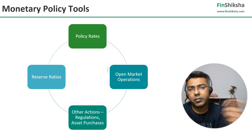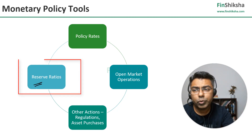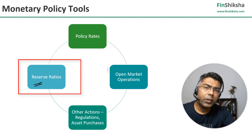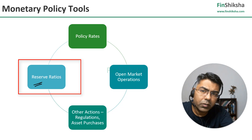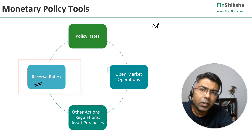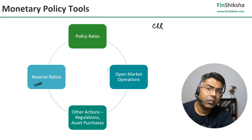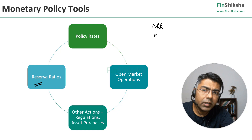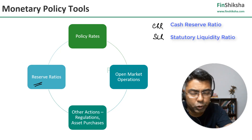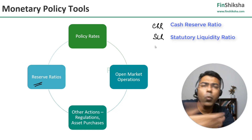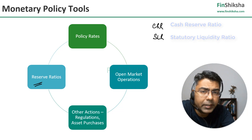We start with something called reserve ratios. What are reserve ratios? There are two commonly used kinds: CRR, which is cash reserve ratio, and SLR, which is statutory liquidity ratio. What do they mean and why are they needed?